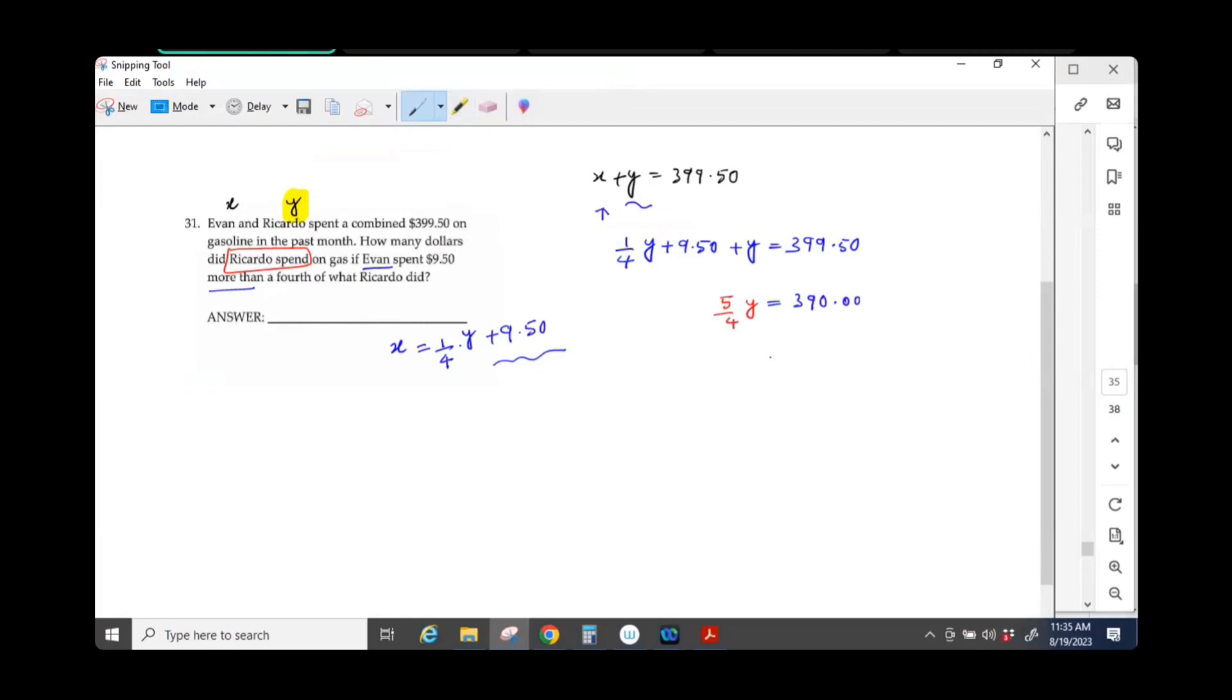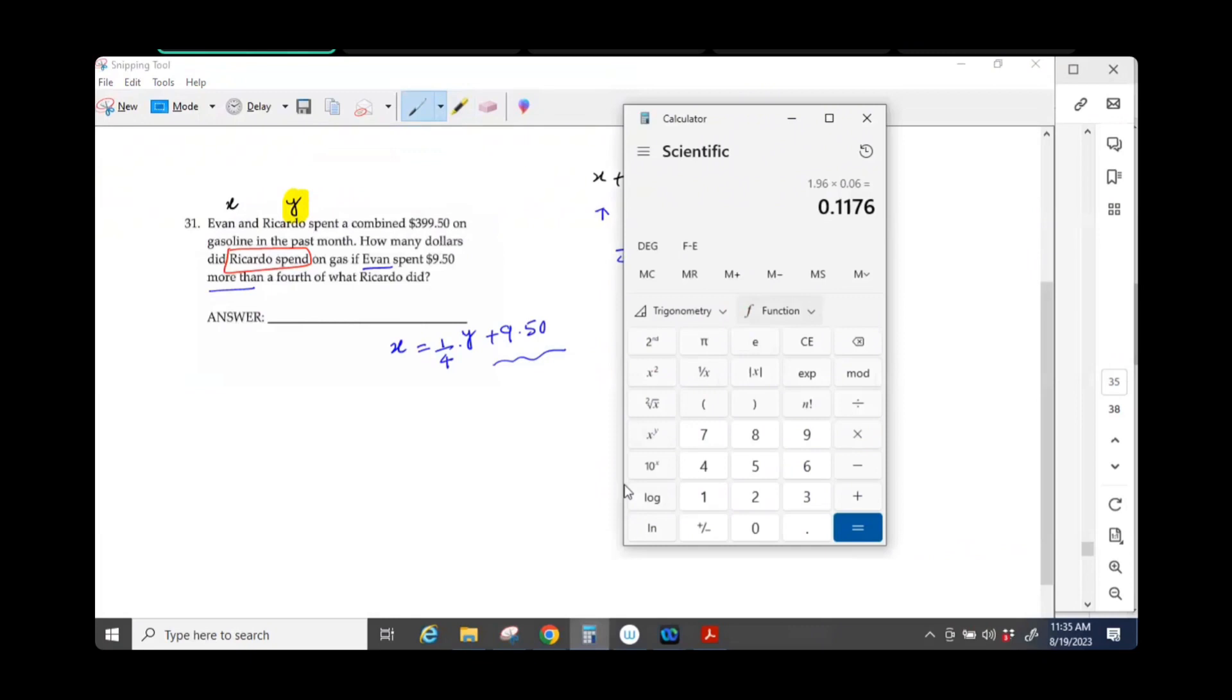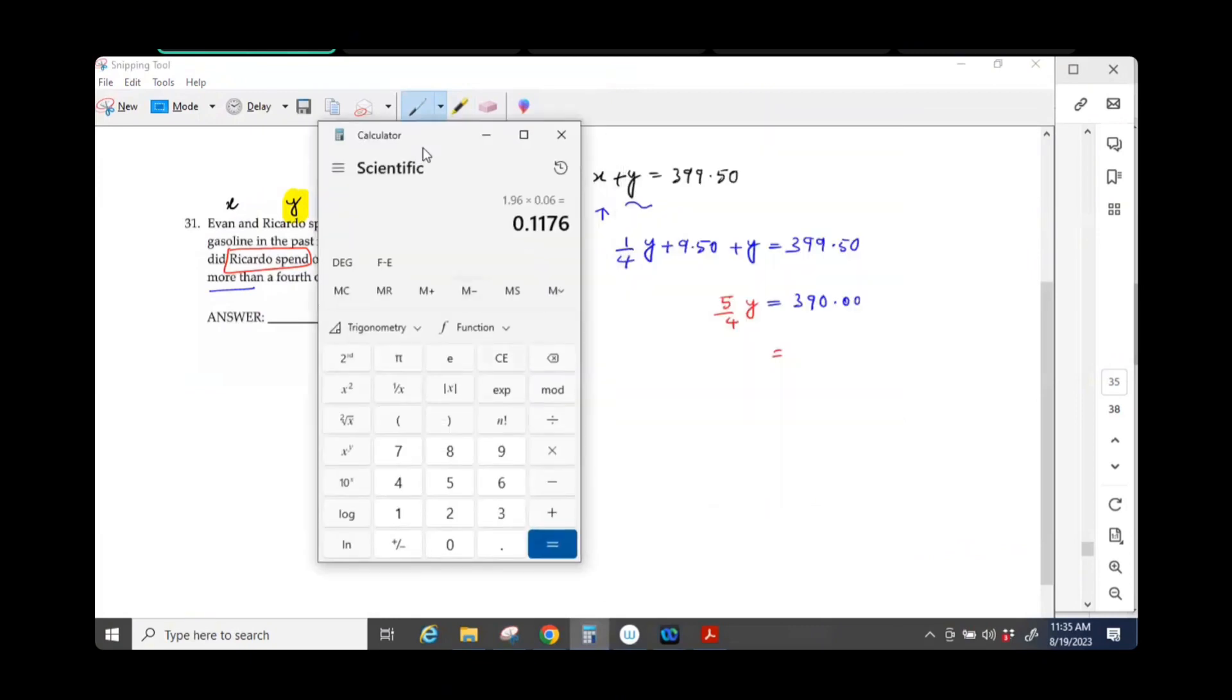Five-fourths Y, now what are you doing? How do you solve for Y? You multiply $390 with the reciprocal. Multiply $390 with the reciprocal of five-fourths.